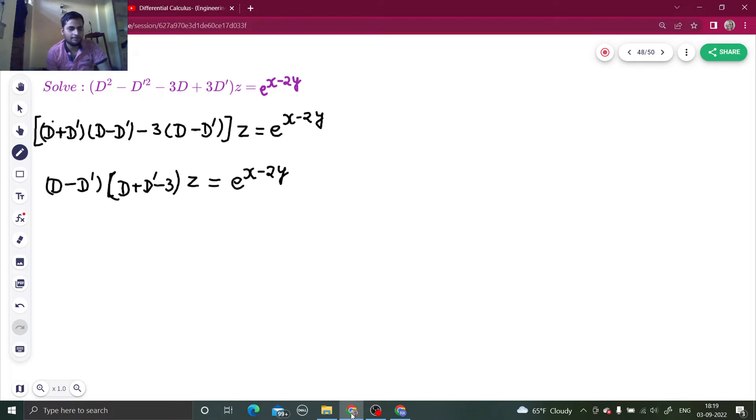Now, for finding complementary function, I will compare each factor with d minus m d dash minus a. Comparing the first factor with this, I get m as 1, let's say that m1 and a as 0. Let's say that a1 and m2. Comparing plus 1 with minus m, I am getting m2 as minus 1 and a2 as 3.